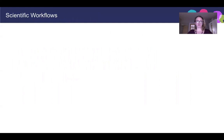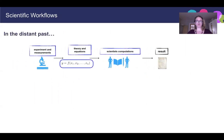I will start from motivation and give a more general motivation by comparing scientific workflows in the past and now. In a simplified model of scientific workflow in the past, scientists were making experiments, and even if the experimental setup was pretty complex, they were often using much simpler tools. They were using theory and equations applied to input data and scientific computation to get results, which were then shared with the community by publishing in journals.